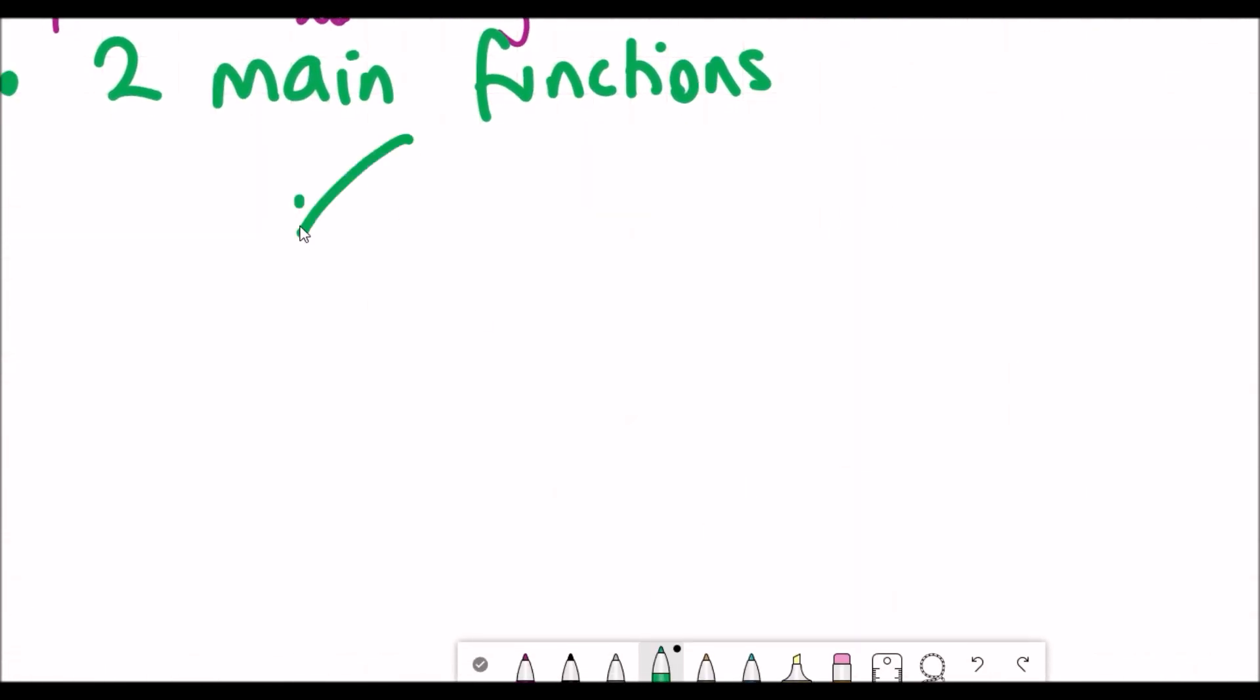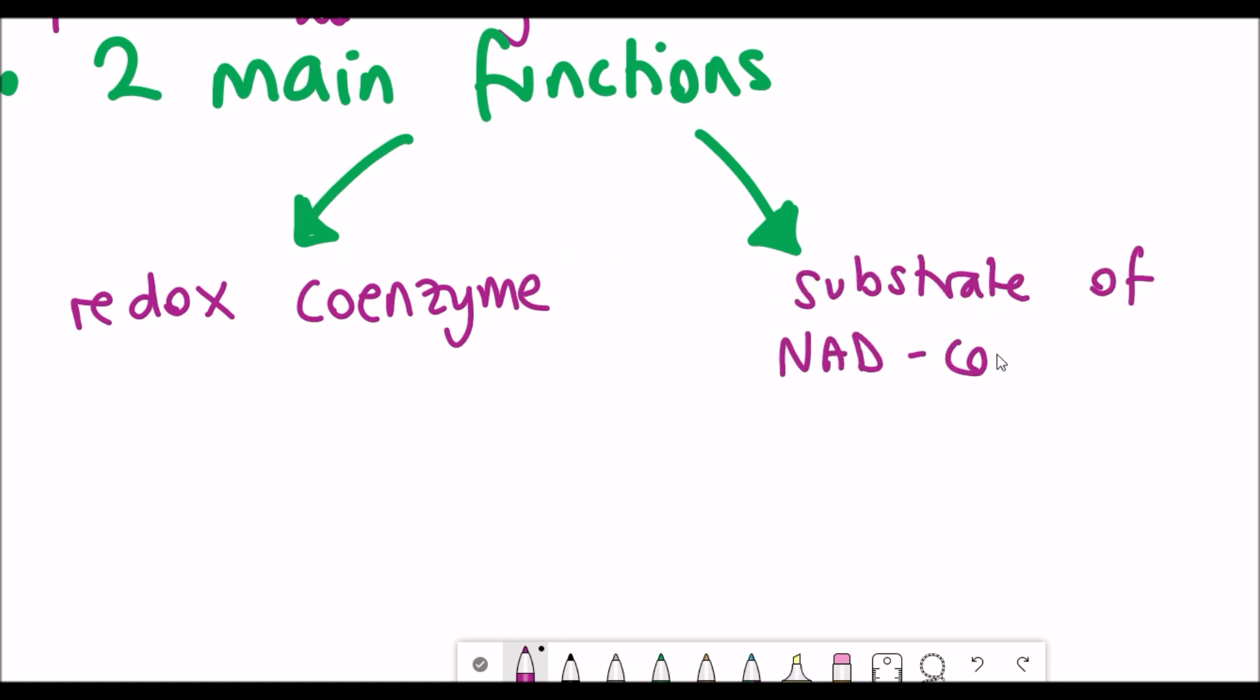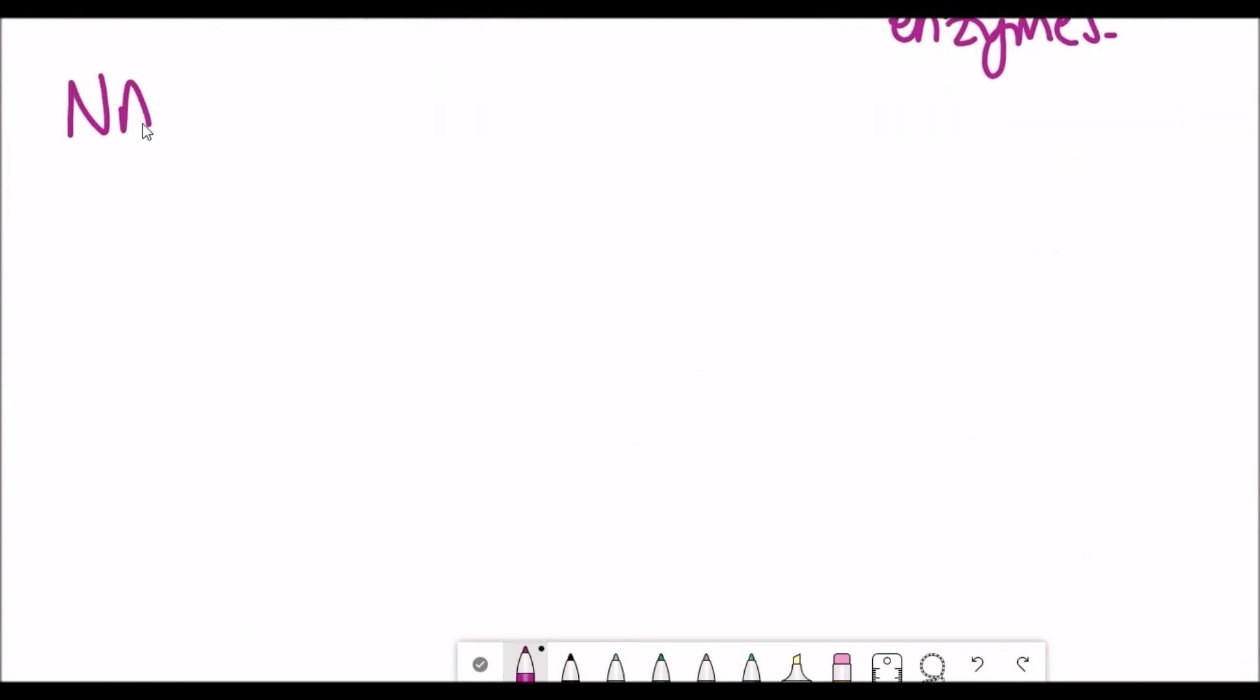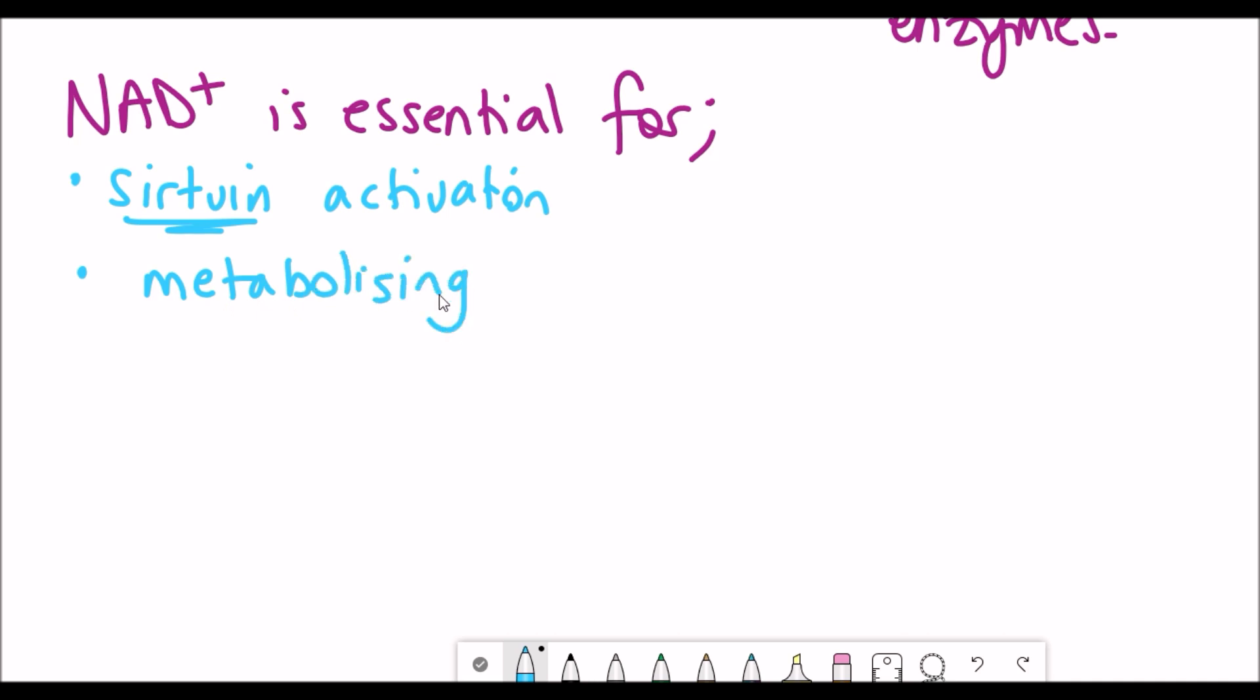NAD has two main functions. The first one is as a redox co-enzyme where it acts as a co-factor with metabolic enzymes. And secondly it's a substrate for NAD dependent enzymes. I should really be saying NAD plus because it is the oxidized form that is used in these different cases. NAD plus is essential for sirtuin activation, which are NAD consuming enzymes. NAD is also essential for metabolism including the metabolism of fatty acids and glucose and associated with that it's the generation of ATP which is the cell's energy source.